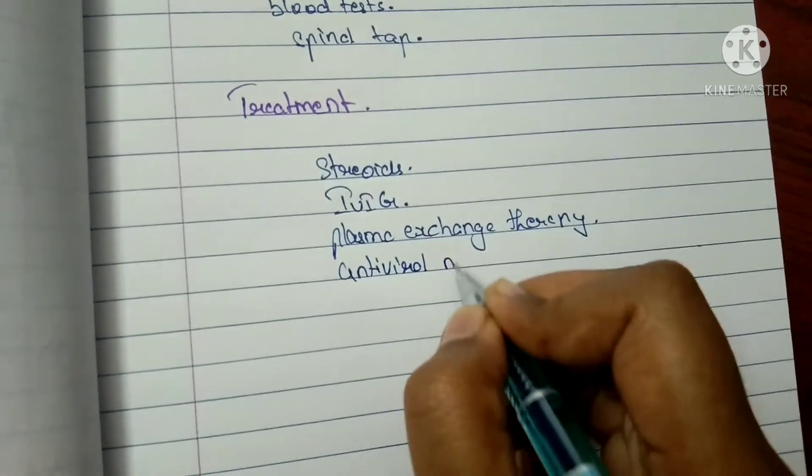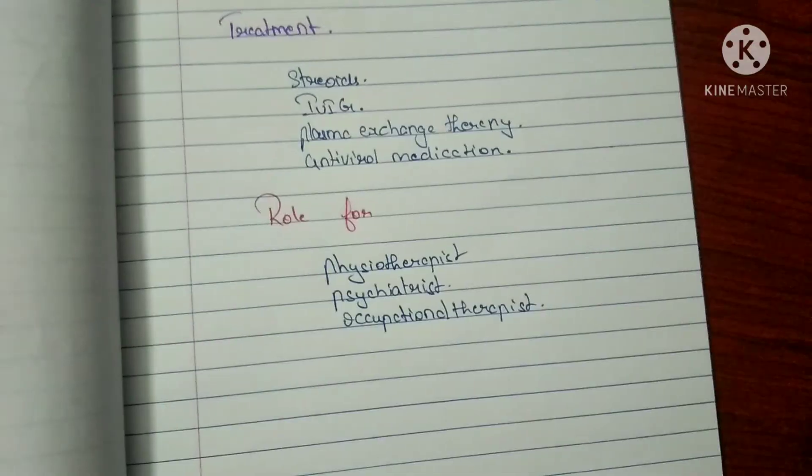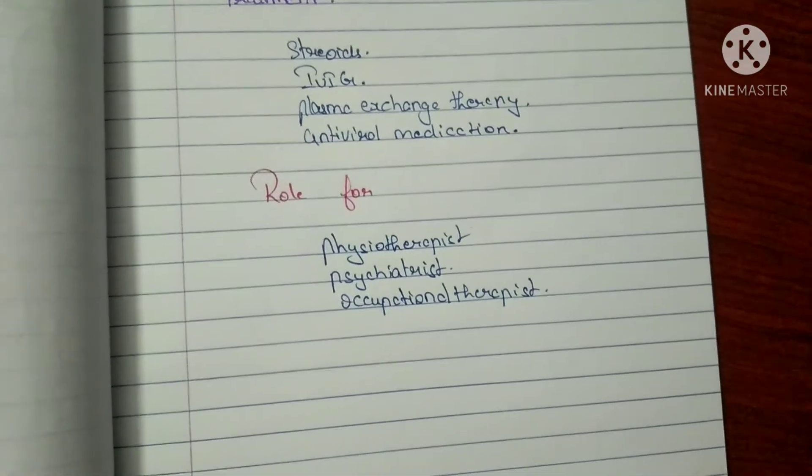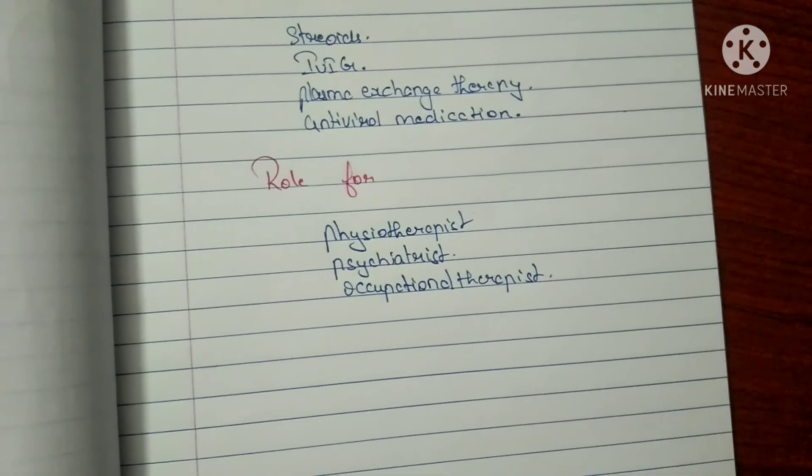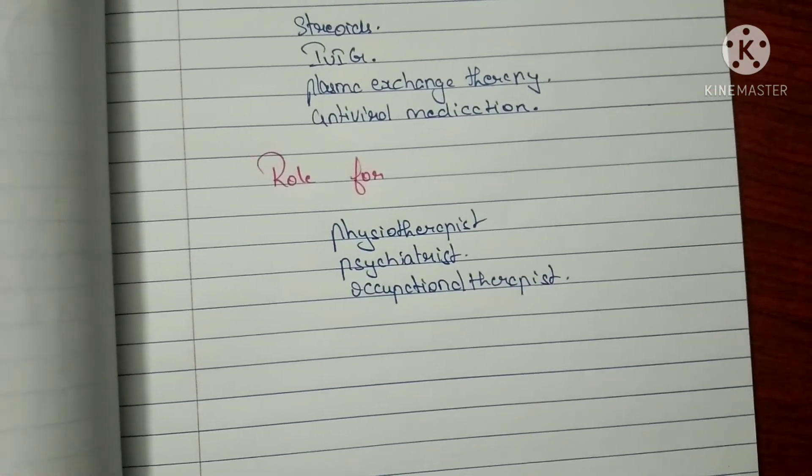We have antiviral medication if there is a case of viral infections. We also have the role of the physiotherapist in case of muscle weakness and loss of flexibility and bowel and bladder control, then the psychiatrist for anxiety and depression, and professional therapists as well.